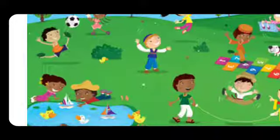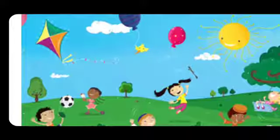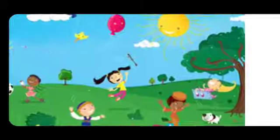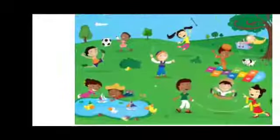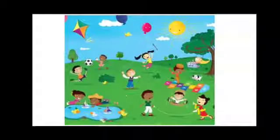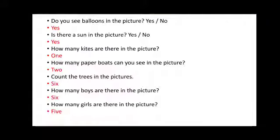How many girls are there in the picture? A girl flying the kite — number one; a girl jumping off the ground — two; a girl swinging in the swing — three; a girl rolling the rope — four; and a girl playing with the paper boat — five. So there are five girls. The answers are: balloons yes, sun yes, kites one, paper boats two, trees six, boys six, girls five.